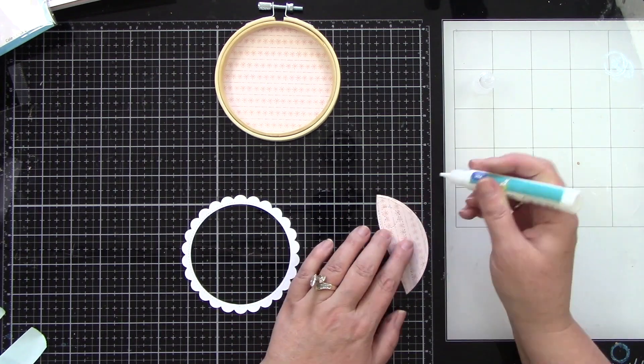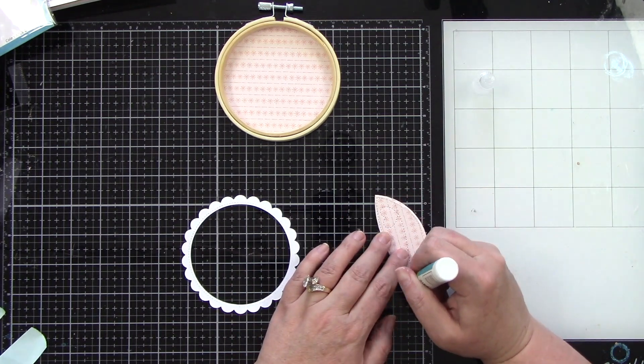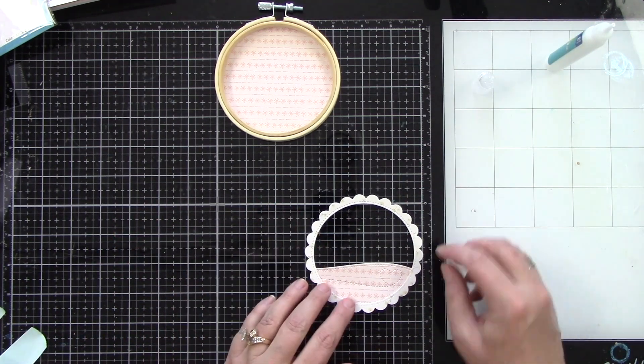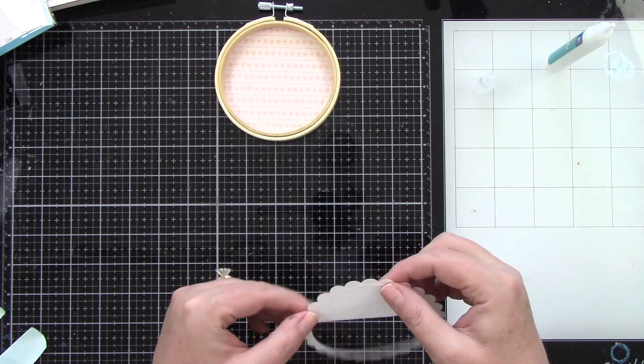I also want to adhere this little tiny half circle piece to our scalloped frame, so a little bit of liquid glue on that and then put that in place.